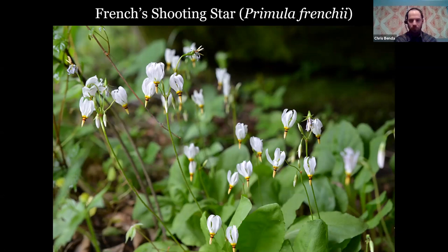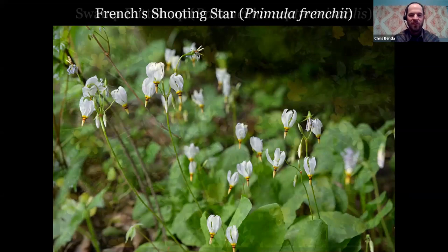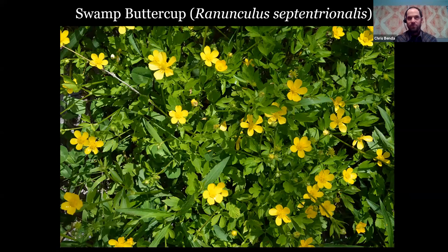Swamp buttercup — there are around 30 species of Ranunculus in Illinois and they can be kind of confusing, but the swamp buttercup does like to keep its feet wet, as the name implies. Ranunculus means 'little frog' — a cute name that refers to the wetland habitat where a lot of these species occur. Some of them are fully aquatic with leaves underwater. Septentrionalis means 'from the north.' There are lots of different buttercups in Illinois, but all pretty similar.